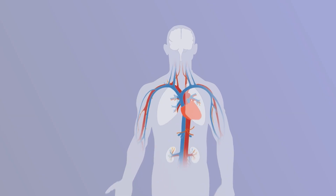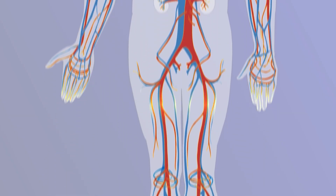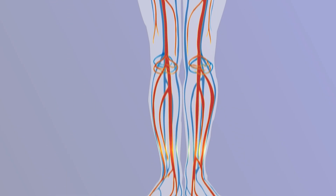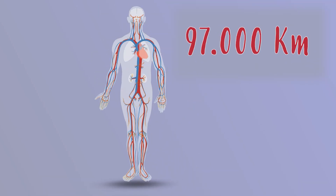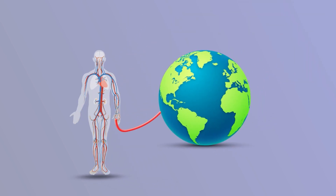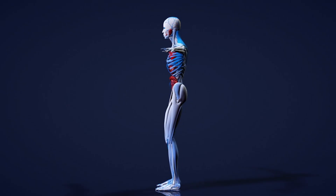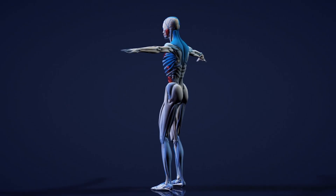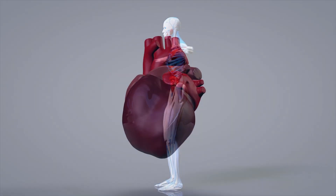Here's a curiosity: do you know how much all of the arteries and veins would measure together if put in a single file? They would measure 96,000 kilometers — equivalent to almost two and a half laps around the Earth. Incredible, right?